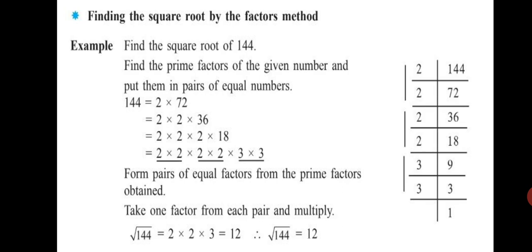So, 144 equals 2 into 2 into 2 into 2 into 3 into 3. After writing down the prime factors, we pair the same numbers together. 2 and 2 make one pair, another 2 and 2 make a second pair, and 3 and 3 make a third pair. So we form pairs of equal factors from the prime factors obtained. The last step is to take one factor from each pair and multiply — that gives you the square root.